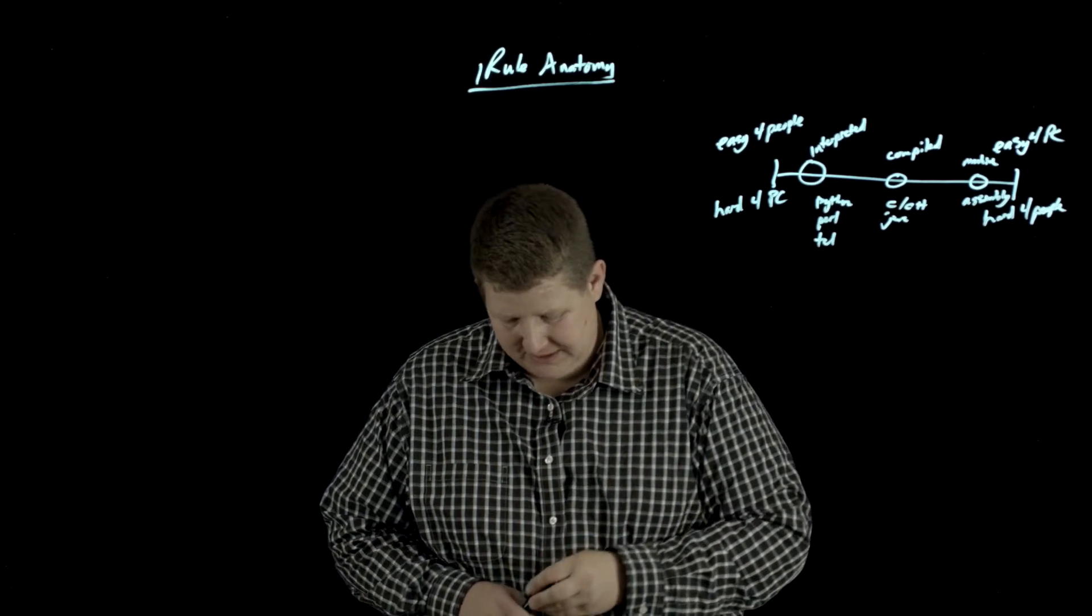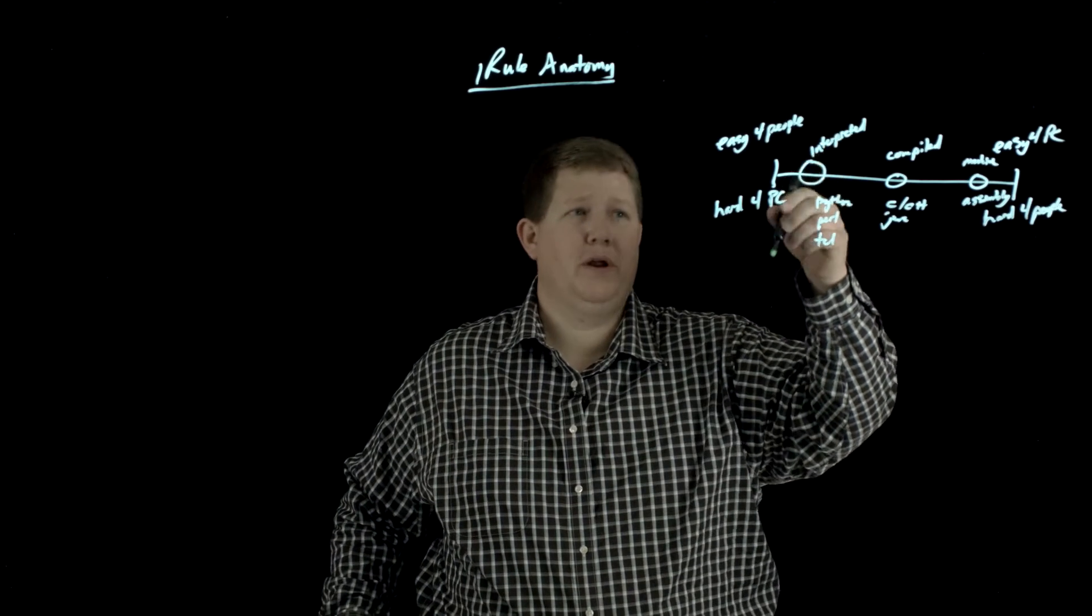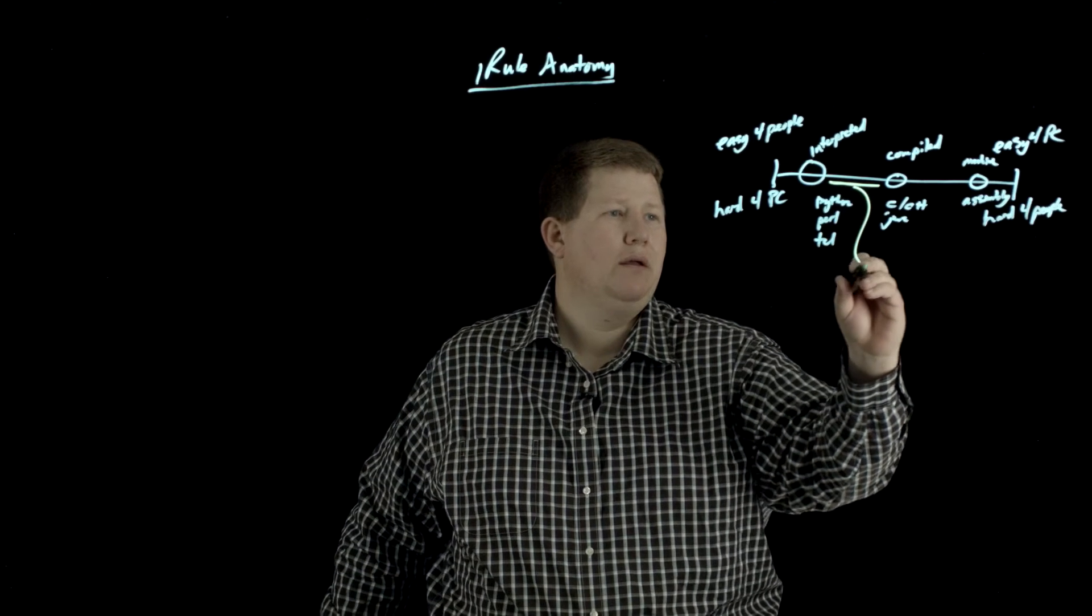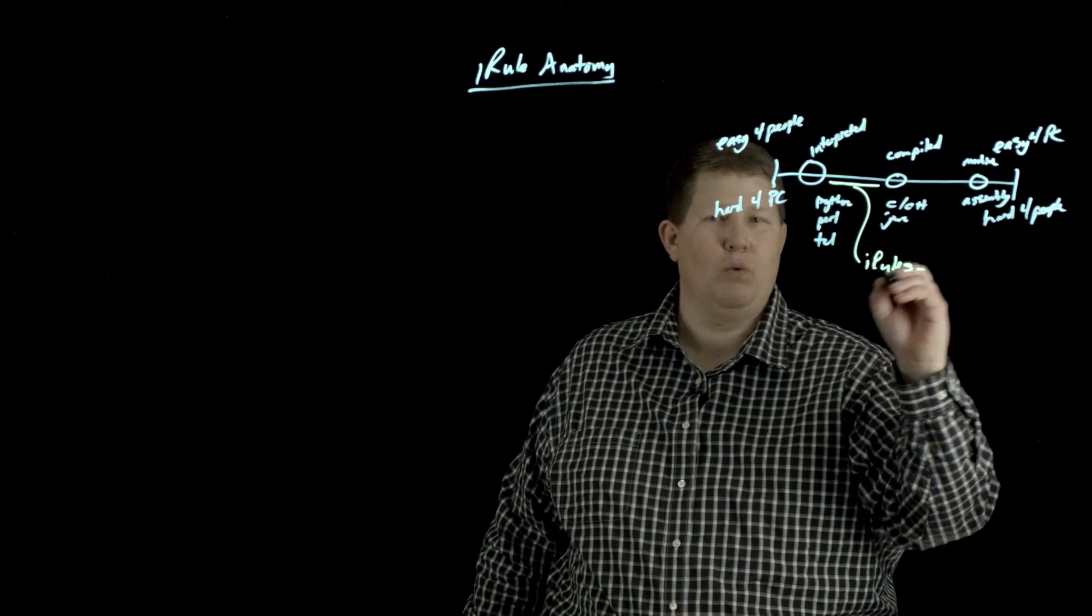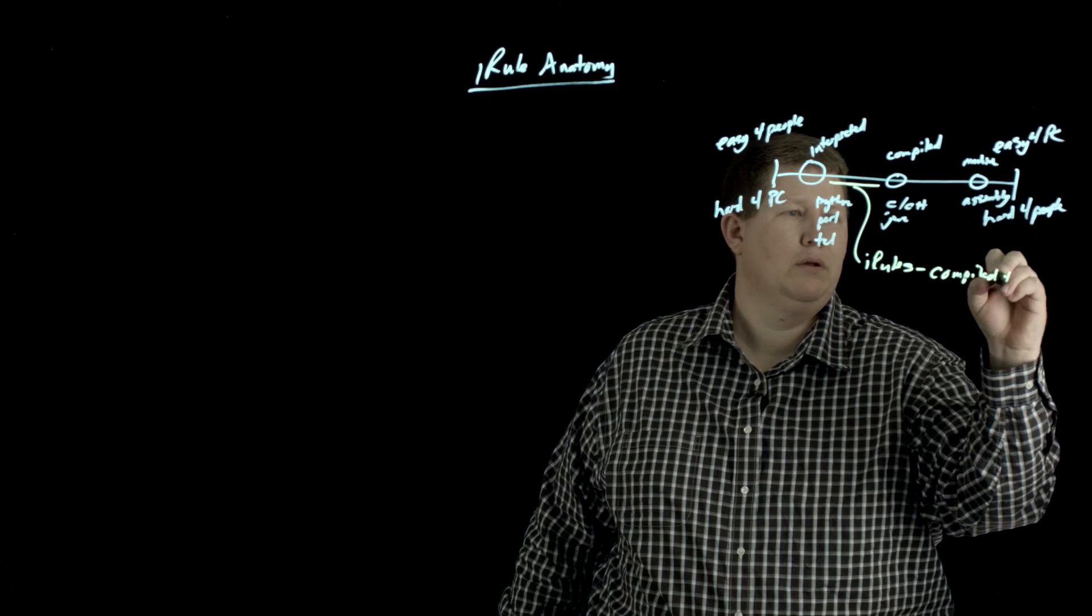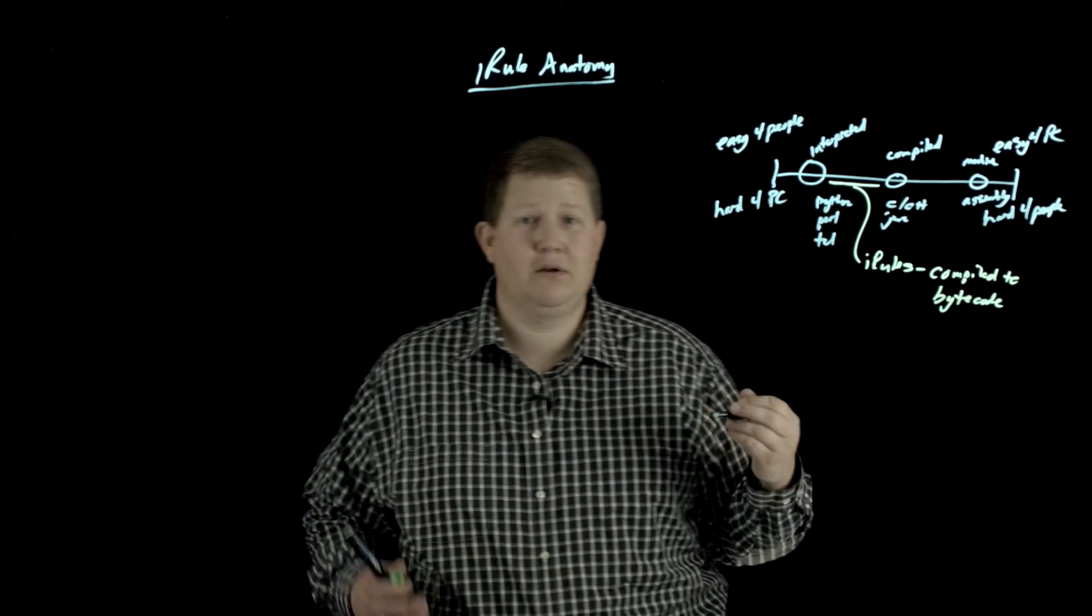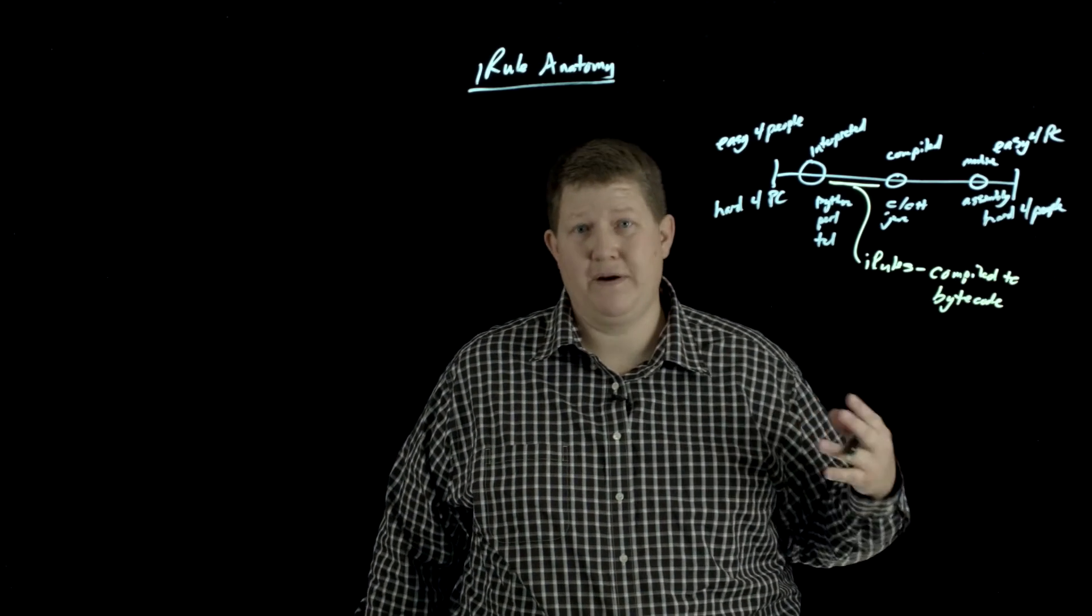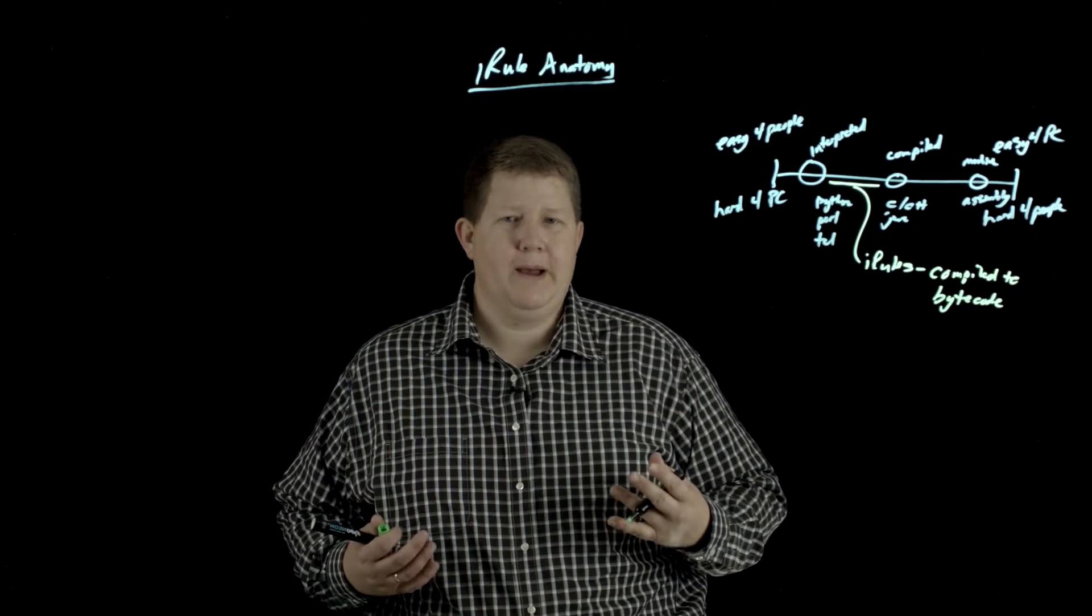So where iRules exist on this spectrum - you would think Tcl is interpreted, so iRules would be here - but iRules actually live right here in between compiled and interpreted languages. That's because iRules, once they're saved, are compiled to bytecode. Not only is Tcl a very lightweight language, but compiling it down to bytecode makes it very fast. The reason it needs to be very fast is if you look at analyzing a firewall log or converting a configuration or parsing text on a server, that doesn't have to happen quickly - there's no immediacy to that.